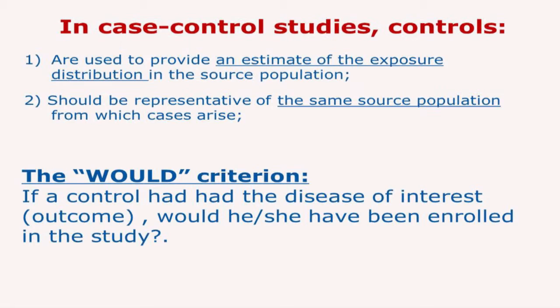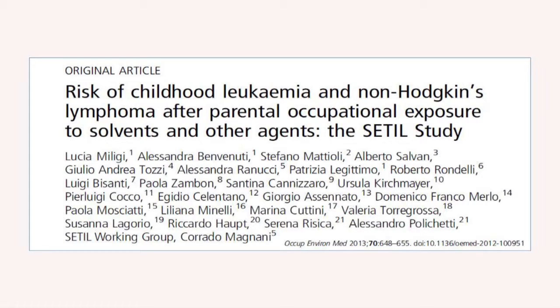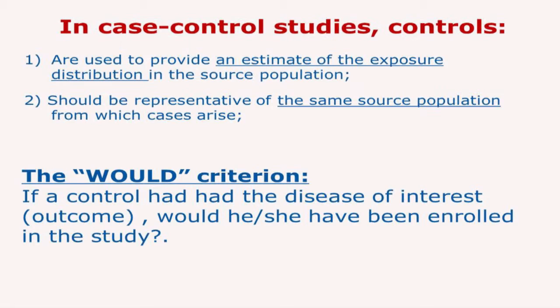Epidemiologists often use the 'would criterion': if a control had had the disease being studied, would he or she end up in the series of cases? If the answer is yes, this is good, because it means that controls are at risk of becoming cases and are from the same source population. Controls have the function of providing an estimate of the exposure distribution in the source population. To be representative generally means there should be a random sample of the study base, ideally.